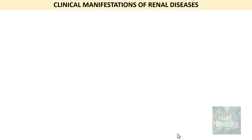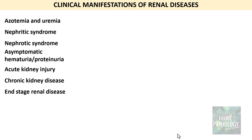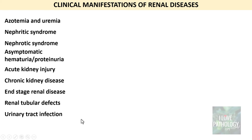The clinical manifestations of various renal diseases can be categorized into various headings: they can manifest with azotemia and uremia; with nephritic or nephrotic syndrome; as asymptomatic hematuria or proteinuria; as acute kidney injury, chronic kidney injury, chronic kidney disease, or end-stage renal disease; renal tubular defects; urinary tract infections; nephrolithiasis or calculi; or obstruction and tumors.